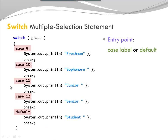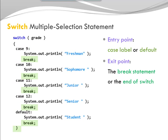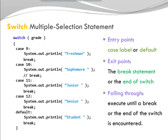Let's look at the entry points. We can have different entry points — those are my case labels or my default. That's where I start my execution. We have different exit points. The exit points are my break statements, or whenever I've reached the end of my switch — that's also when I'm done. Java has something called falling through, which means I keep executing until I reach an exit point — either a break statement or the end of my switch statement.